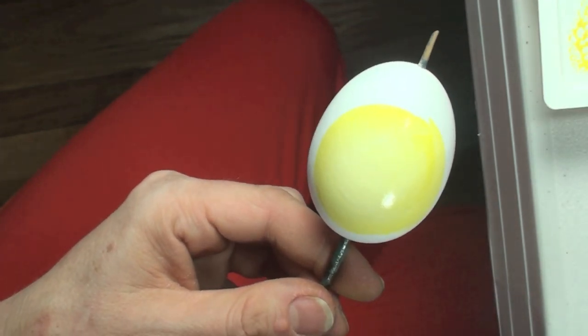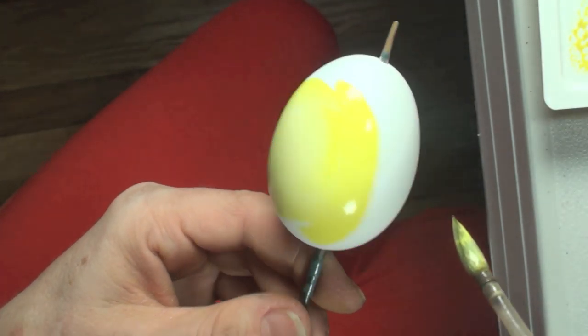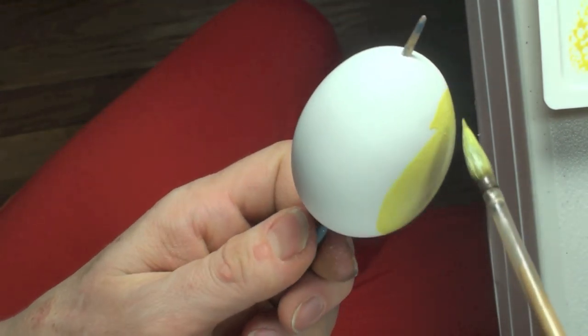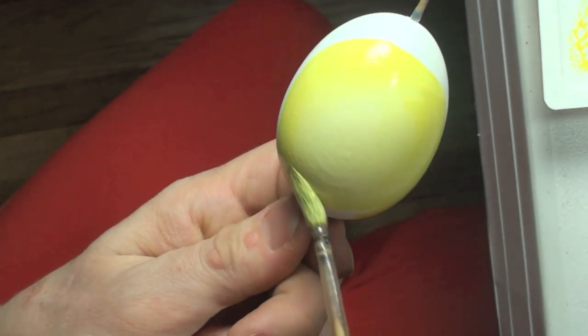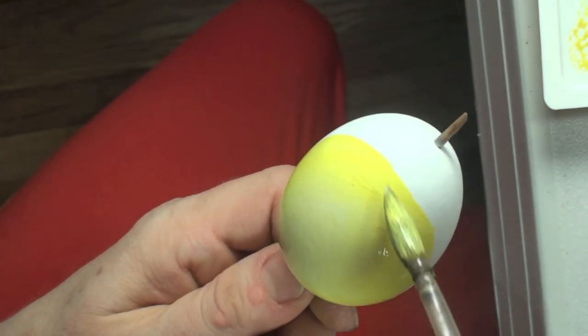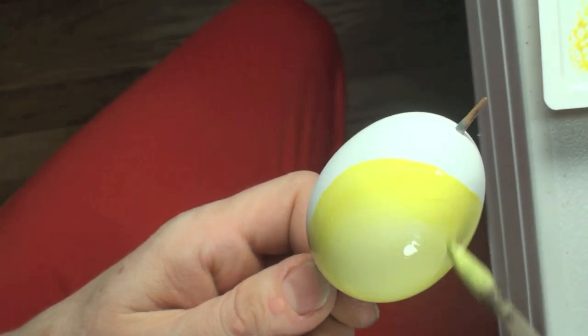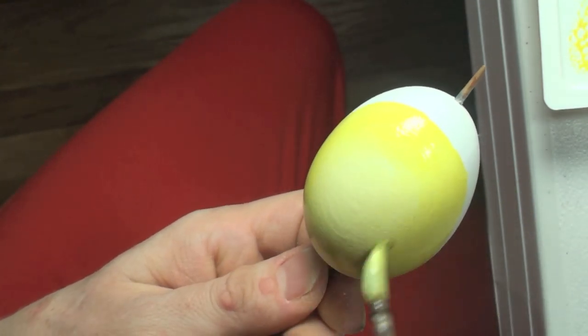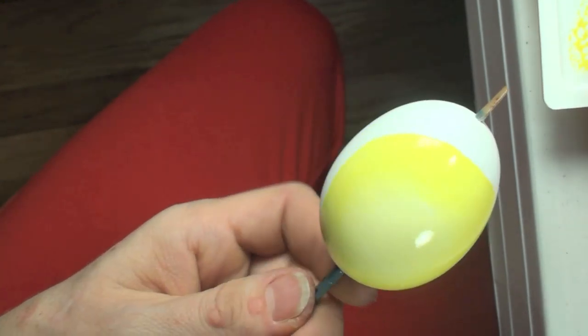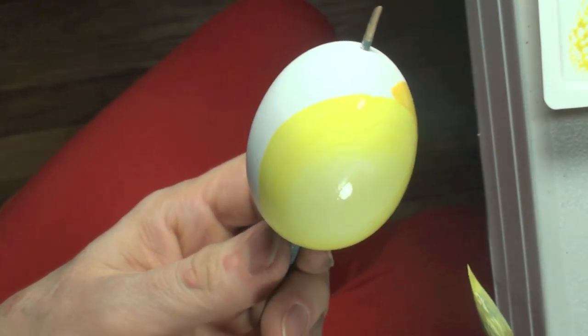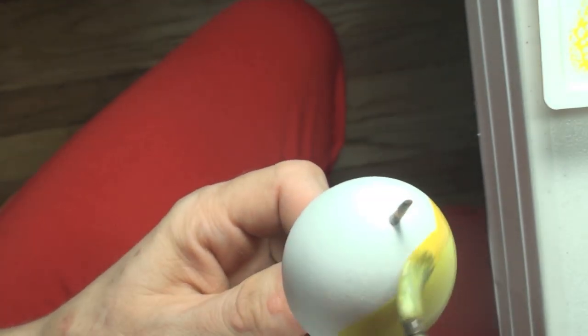Now instead of painting the whole egg surface the same color, we're going to create a transition instead. How we're going to achieve this is by taking white paint and mixing yellow paint into it. As we go from the front of the egg to the back, we're going to add more and more yellow paint into it, and later on a little bit of orange. By the time we get to the back of the egg, it's going to be completely orange.